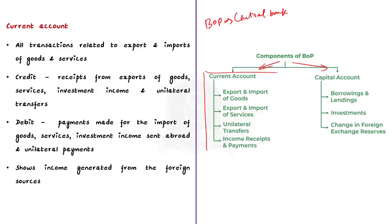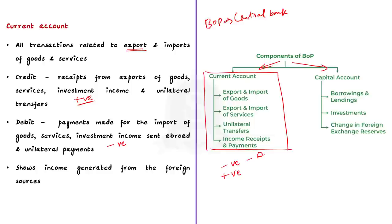Balance of payment is composed of two parts: current account and capital account. Current account refers to transactions in goods, services and unilateral transfers. The receipts from the export of goods, services and unilateral transfers are shown as positive items or credit in the current account, whereas payments made for import of goods, services and outward unilateral payments are shown as negative items or debit. The balance on current account refers to the net value of these credits and debits. When the net value of these transactions is negative, it leads to the current account deficit — this is what Pakistan is exactly undergoing right now. The value of imports has surpassed the value of exports in Pakistan. If the net value is positive, it is known as current account surplus.